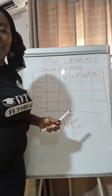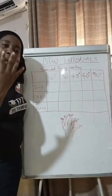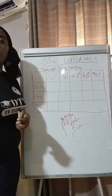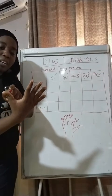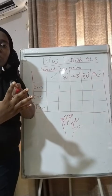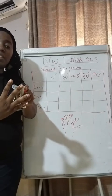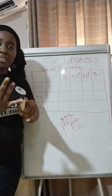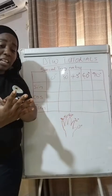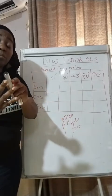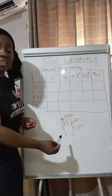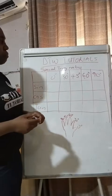This trick involves your right hand. Look at your right hand right now. Your thumb is zero degrees, the next finger is 30 degrees, the middle finger is 45 degrees, the ring finger is 60 degrees, and your little finger is 90 degrees. So from lowest to highest: 0, 30, 45, 60, and 90 — label them in your mind.